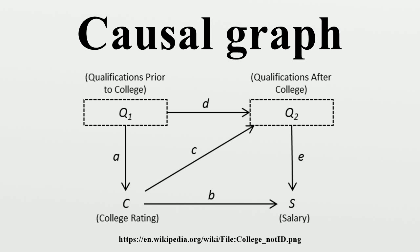Each variable in the model has a corresponding vertex or node, and an arrow is drawn from a variable X to a variable Y whenever Y is judged to respond to changes in X when all other variables are held constant. Variables connected to Y through direct arrows are called parents of Y, or direct causes of Y, denoted by par.